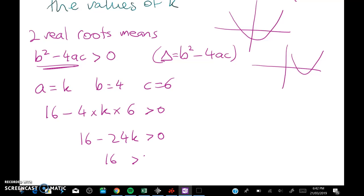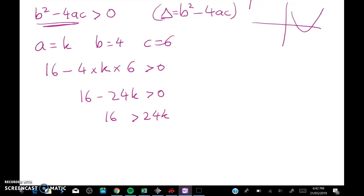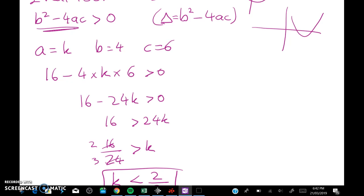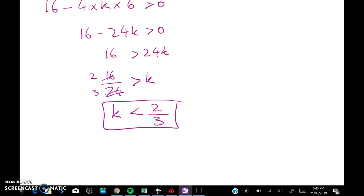That gives me 16 minus 24k is strictly positive. 16 is greater than 24k and now dividing through by 24 I get 16 over 24 is greater than k and I can simplify this to give me two thirds removing by division a common factor of eight. So we're going to write our final answer is k is less than two thirds. So there you go. That's a pretty simple question. Often with these ones you'll end up getting a quadratic in k and then you're dealing with a quadratic inequality which is a little bit worse. But here I just got that k is less than two thirds.